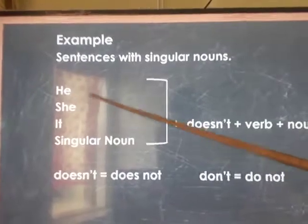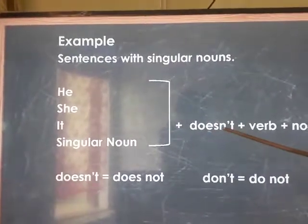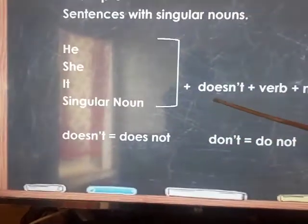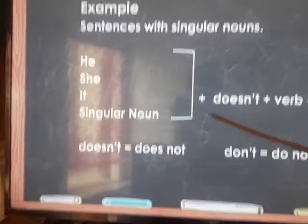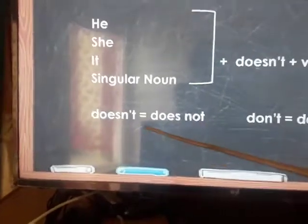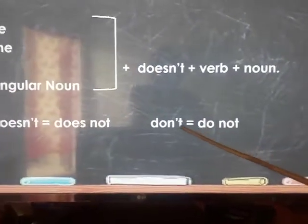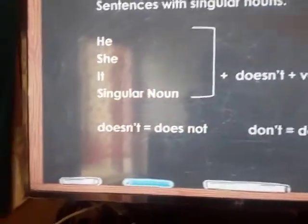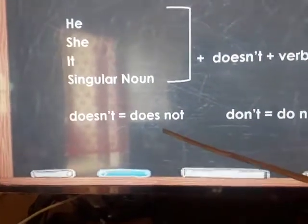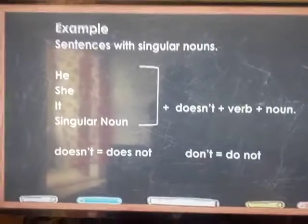Examples: 'He doesn't talk. She doesn't go. It doesn't like. Her doesn't drink.' The short form of 'does not' is 'doesn't.' The short form of 'do not' is 'don't.' The long form of 'doesn't' is 'does not,' and the long form of 'don't' is 'do not.'